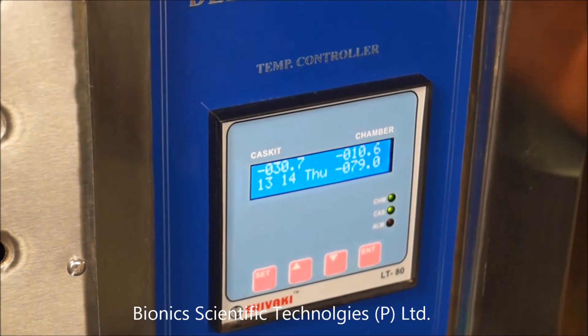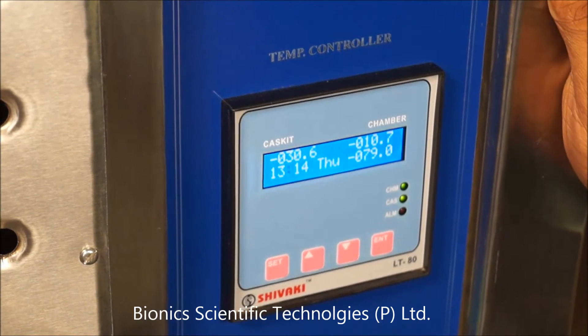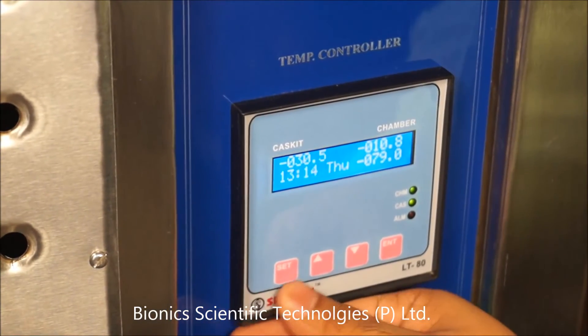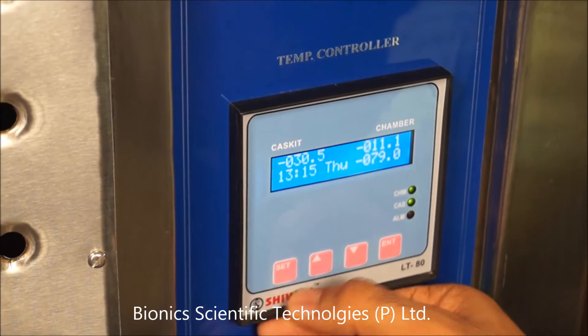Now let's set the temperature of this deep freezer. Here is the set button from where you can set the temperature. You have to press it twice like this.